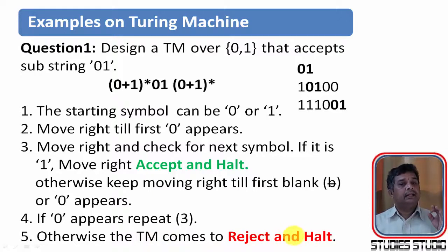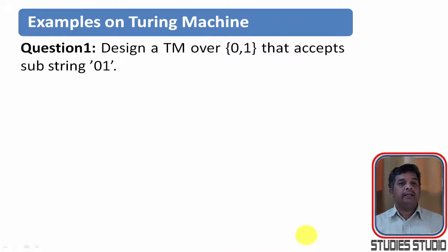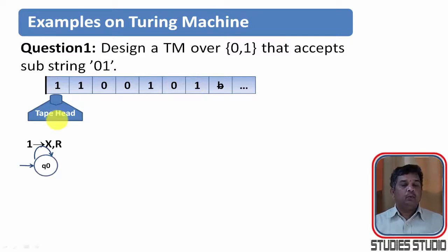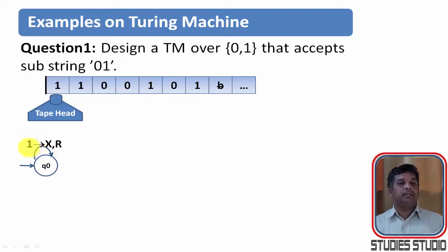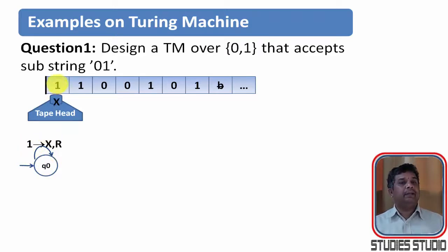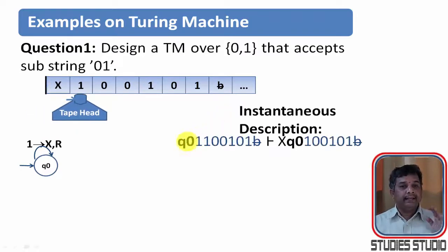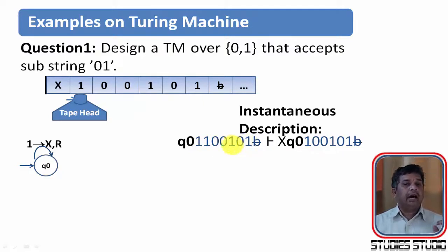Let us trace the string: 1, 1, 0, 0, 1, 0, 1. We are in state q0, and as many 0s or 1s appear before the first 0, we stay in the same state. So the input symbol is 1 — we are going to write x in that location and move right. The instantaneous description is: we are at state q0 and we had 1, 1, 0, 0, 1, 0, 1. After writing x onto the tape, we remain in state q0.